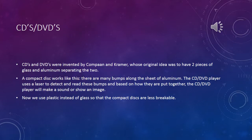CDs and DVDs. When we first started this project, we didn't think that there was much to CDs and DVDs, but there actually is. CDs and DVDs were invented by Kompon and Kramer, whose original idea was to have two pieces of glass separated by a sheet of aluminum. A compact disc works like this: there are many bumps along the sheet of aluminum. The CD or DVD player uses a laser to detect and read these bumps, and based on how they are put together, the player will make a sound or show an image. Now, we use plastic instead of glass so that the compact discs are less prone to breaking.